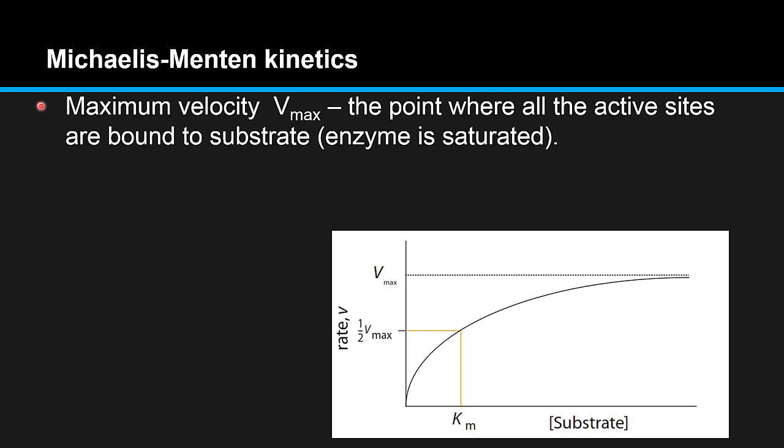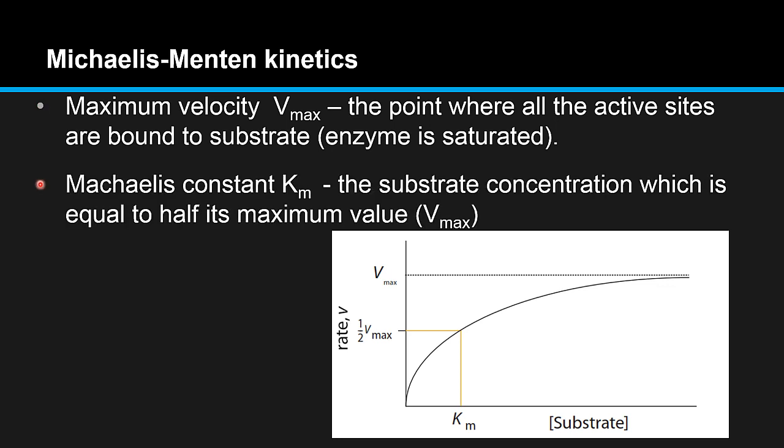Maximum velocity Vmax is the point where all the active sites are bound to substrate and the enzyme is saturated with substrate. The Michaelis constant Km is the substrate concentration which is equal to half its maximum value or half the Vmax.